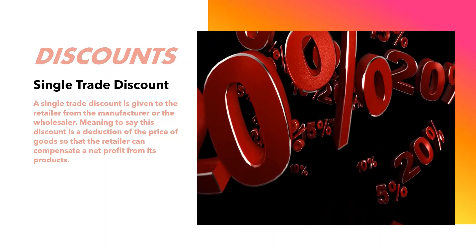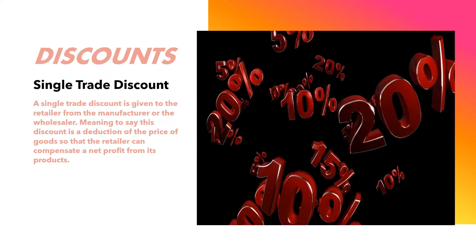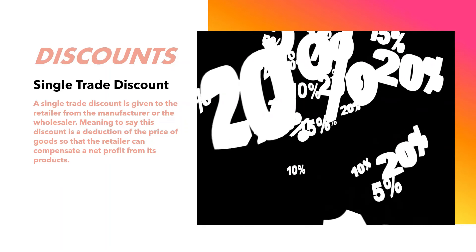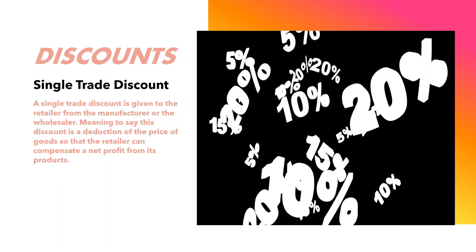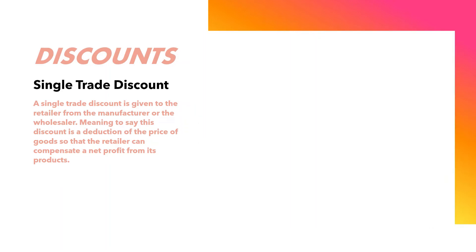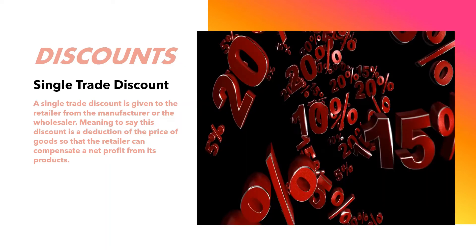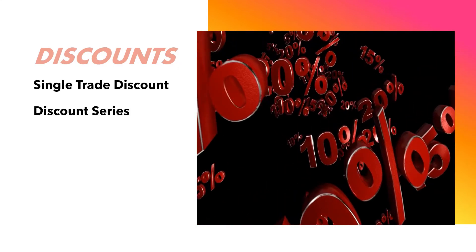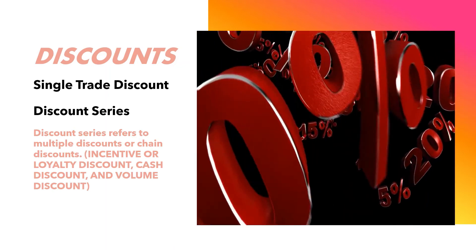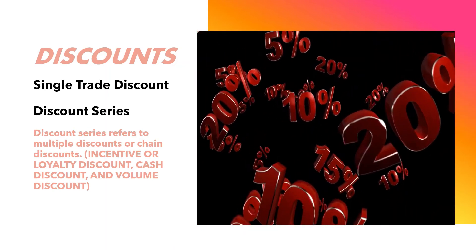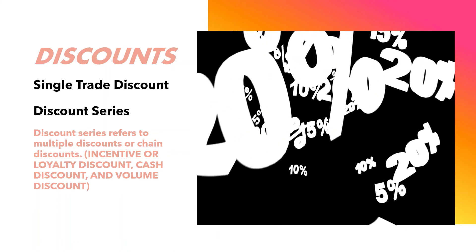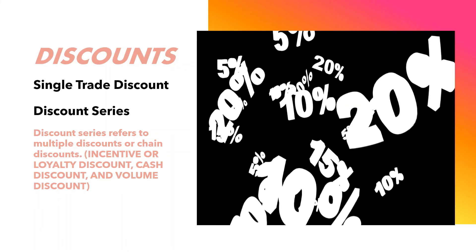Next is a single trade discount — a type of discount given to the retailer from the manufacturer or the wholesaler. This discount is a deduction of the price of goods so that the retailer can compensate a net profit from its products. Next is a discount series, a type of discount that refers to multiple discounts or chain discounts, given to clients or customers for incentive or loyalty discount, cash discount, and volume discount.